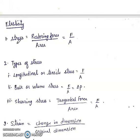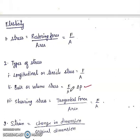First is stress. Stress is equal to restoring force upon area, equal to F by A. There are three types of stress: longitudinal or tensile stress, which is force upon area; bulk or volume stress, which is force upon area, also called delta P because force upon area is pressure; and shearing stress, which is tangential force upon area.